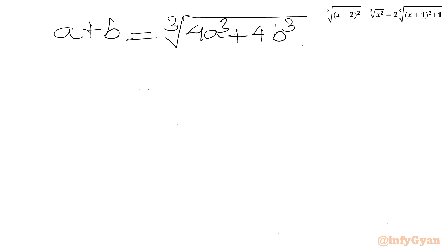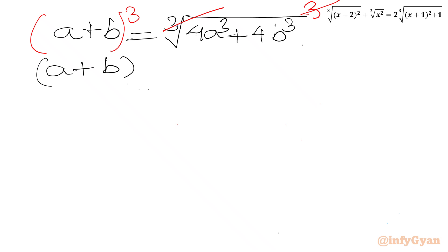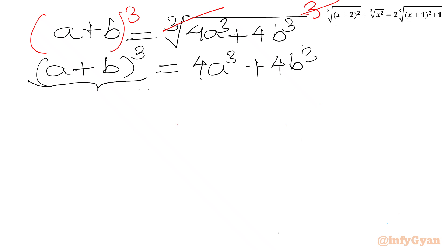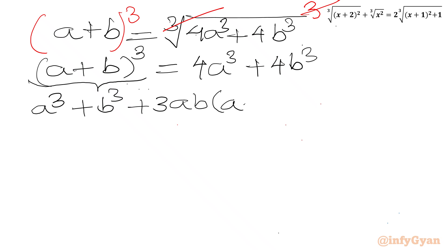Now we will consider cubing both sides. Cube root and cube will cancel from the RHS. We write our equation: (a + b)³ equal to 4a³ + 4b³. Now I will use the (a+b)³ formula, which gives us a³ + b³ + 3ab(a + b) equal to 4a³ + 4b³.